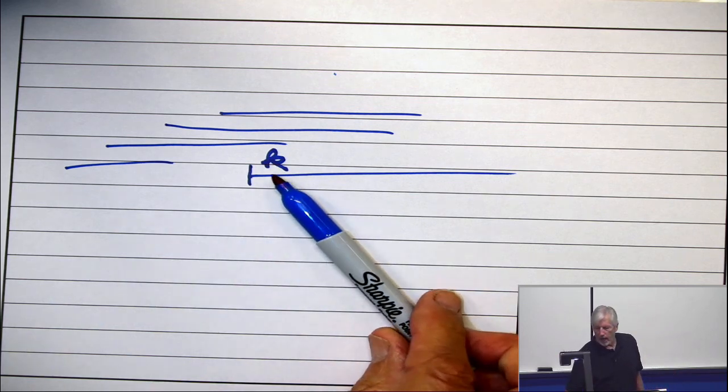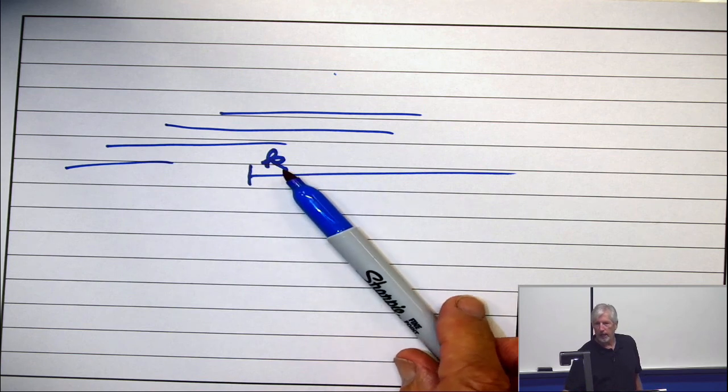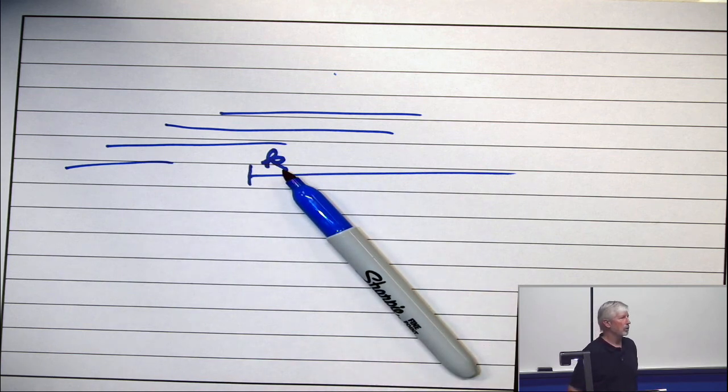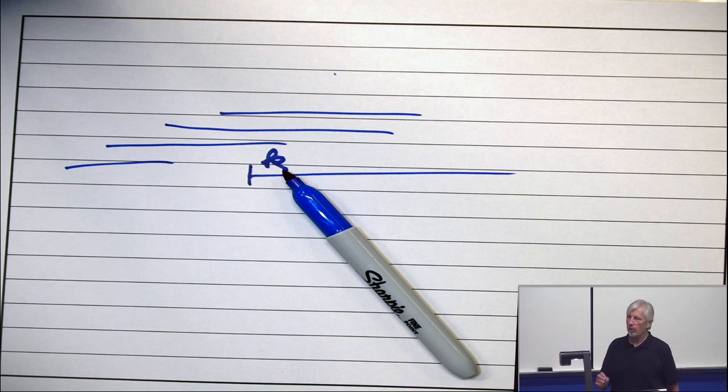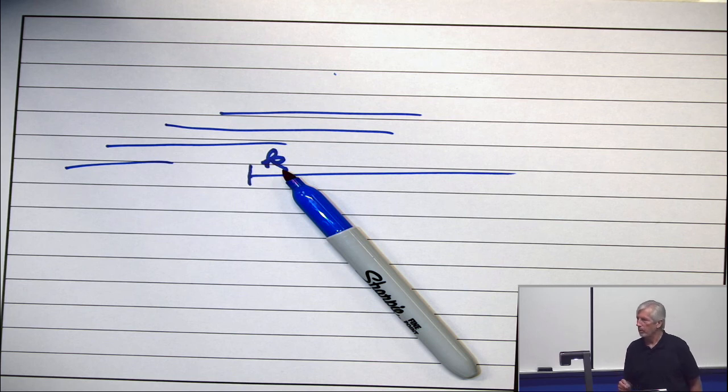So why did I assign color K to this interval? I couldn't assign color 1, I couldn't assign color 2, I couldn't assign color 3, dot dot dot, up to I couldn't assign color K minus 1.